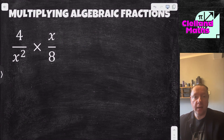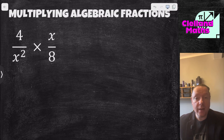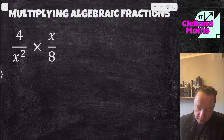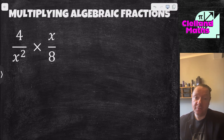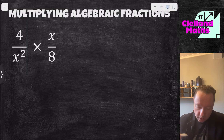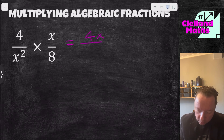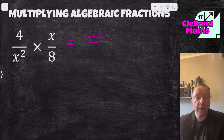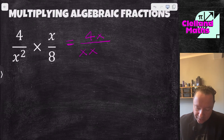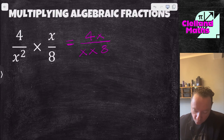Next example for multiplying algebraic fractions. We've got 4 over x squared times x over 8. This time we can either simplify in advance or simplify when you're finished. I like to simplify in advance, but I like to put it under one fraction first. So I've got 4 times x is 4x, all over x squared — think of that as x times x so you can really see it — with an 8 on the bottom.